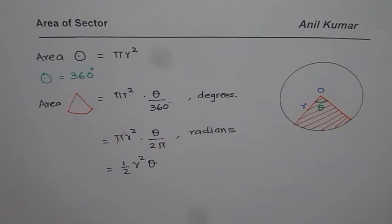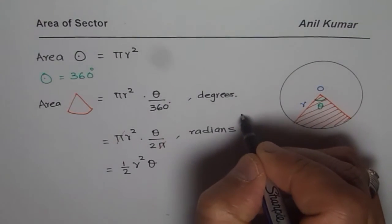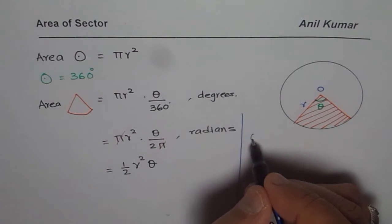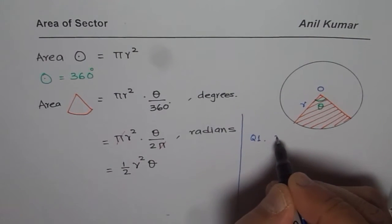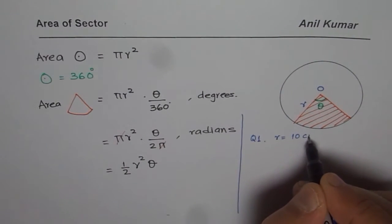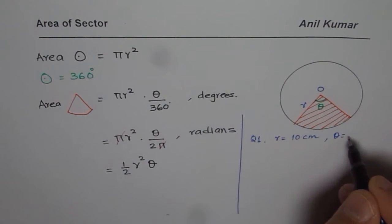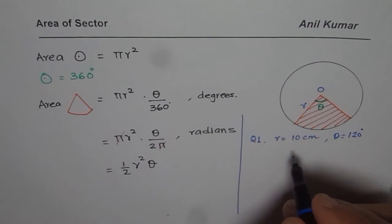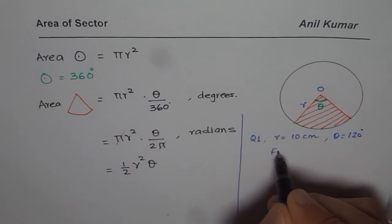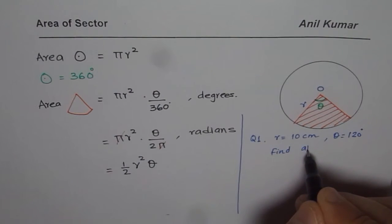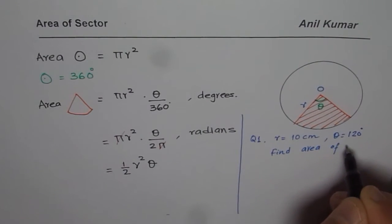Now as an exercise, you can solve some questions related to this. Let's say question number one: you are given radius of 10 centimeters and θ is 120 degrees. Find area of sector.